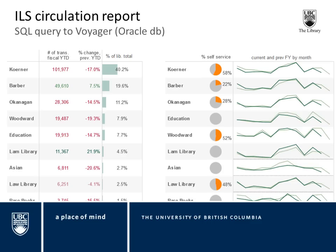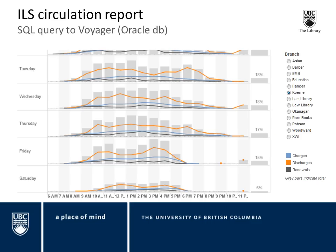One more example using the exact same data set, but now for management decisions around staffing. I'm looking at the hourly number of transactions per hour as an average during a selected period, split out by charges, discharges, and renewals. There's a feature to select by branch and, in the live version, a date picker so you can choose a date range — whether just a term or several years.